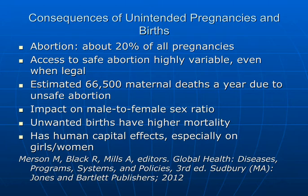What are the consequences of these unintended pregnancies and births? One is abortion — about 20% of all pregnancies. The access to safe abortion is highly variable, even when legal. There are an estimated 66,500 maternal deaths a year due to unsafe abortion. There's an impact on the male-to-female sex ratio. Unwanted births have higher mortality. And it has human capital effects, especially on girls and women.